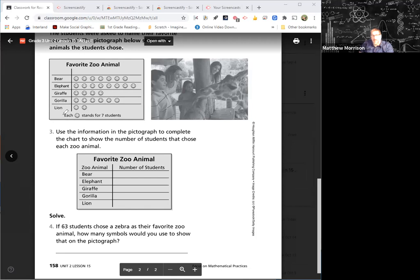A bear favorite zoo animal, we have one, two, three, four, five, six, seven. So seven people like the bear better, right? And of course you know the answer is no, because we have to look for the key. Remember the key right here helps tell us how many each of those smiley faces stand for. Each of those smiley faces stand for seven. It's seven times seven, okay? So seven times seven is 49.